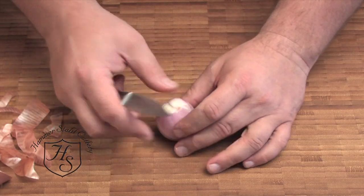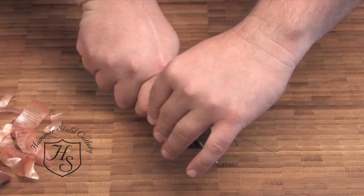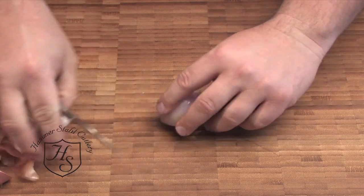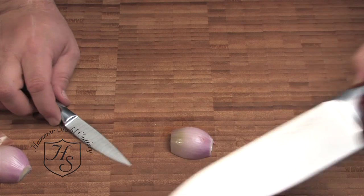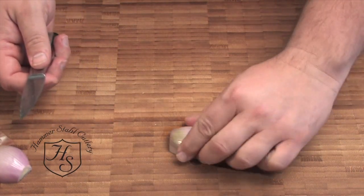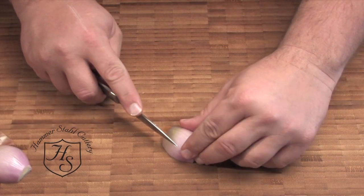Now what we're going to do, we're going to take the shallot and cut it right in half. Instead of using a large chef's knife, we're going to stay with the paring knife because we're using a small object. We're just going to come down through here.